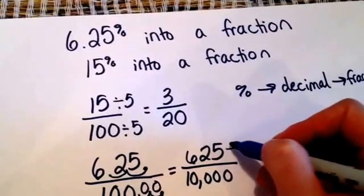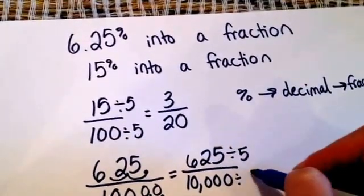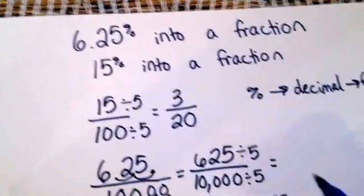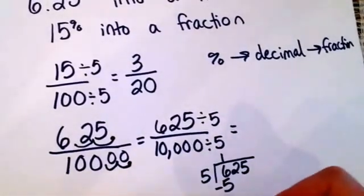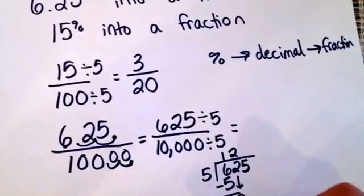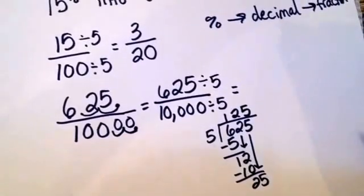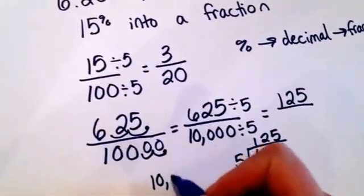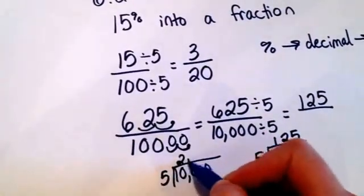And I'm going to go ahead and divide. We'll just make it easy and we'll divide by five. So I get 625 divided by five. Let's see what that is. So 125 and 10,000 divided by five is going to be 2,000.